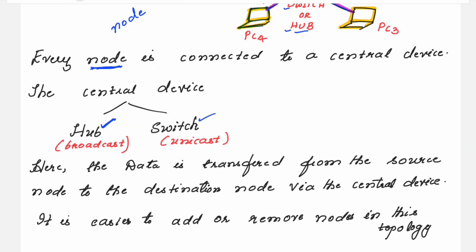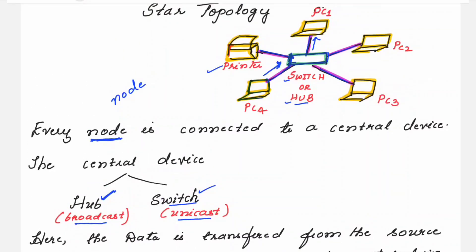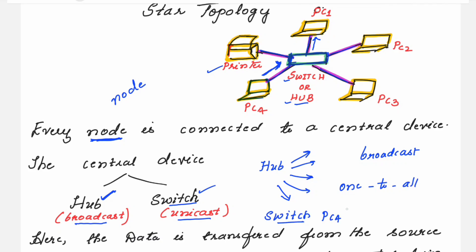If you are using the centralized device as a hub, the transmission is broadcast. If the centralized device is a switch, the transmission is unicast. When using a hub, if PC4 wants to send to PC1, the hub takes the data from PC4 and sends it to all PCs and nodes connected to it — that is called broadcast, one to all. If you are using a switch, and PC4 wants to send data to PC3, it only sends to PC3 — that is called unicast, one to one communication. Preferably the switch should be used so that other nodes do not receive the packet.